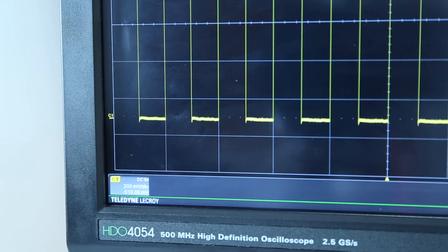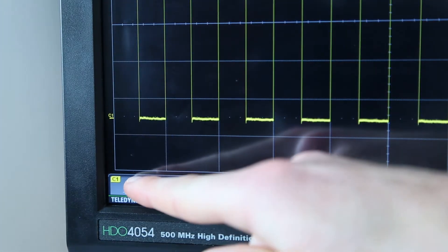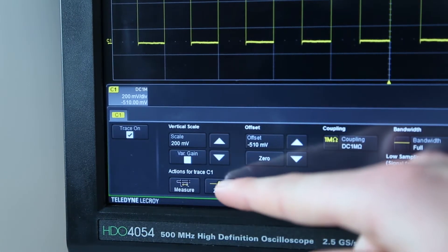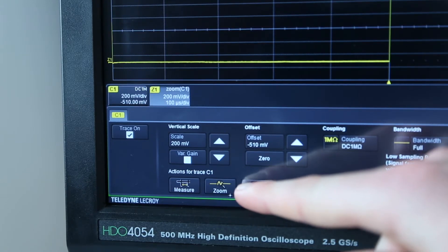A zoom can also be turned on directly from a trace dialog. To do this, touch the descriptor box of the desired source trace. Then, touch the zoom shortcut button in the trace dialog.